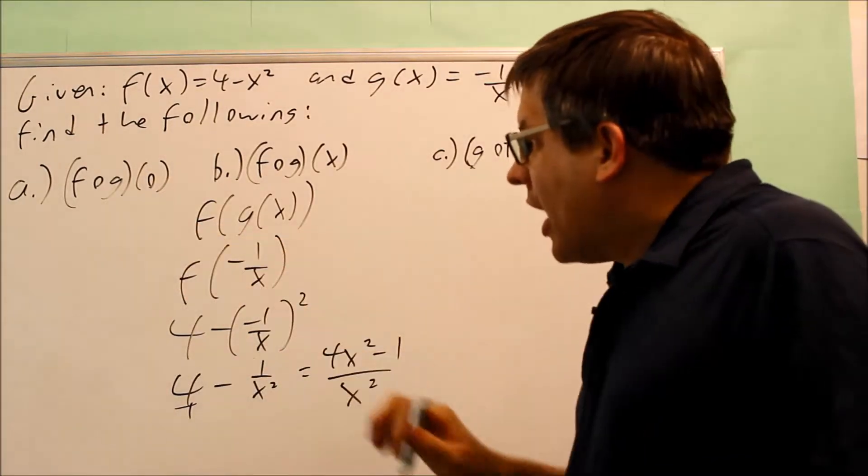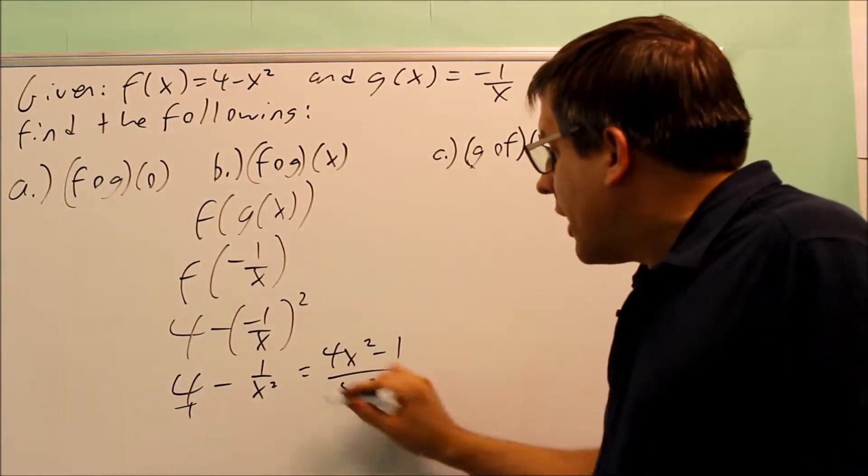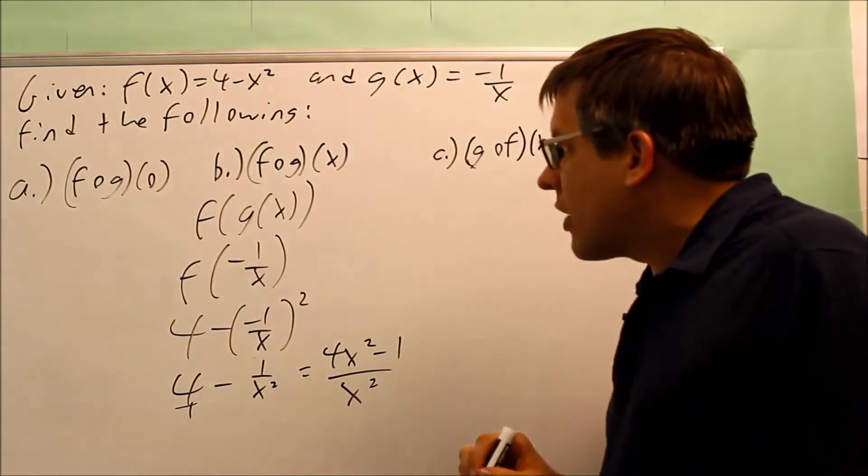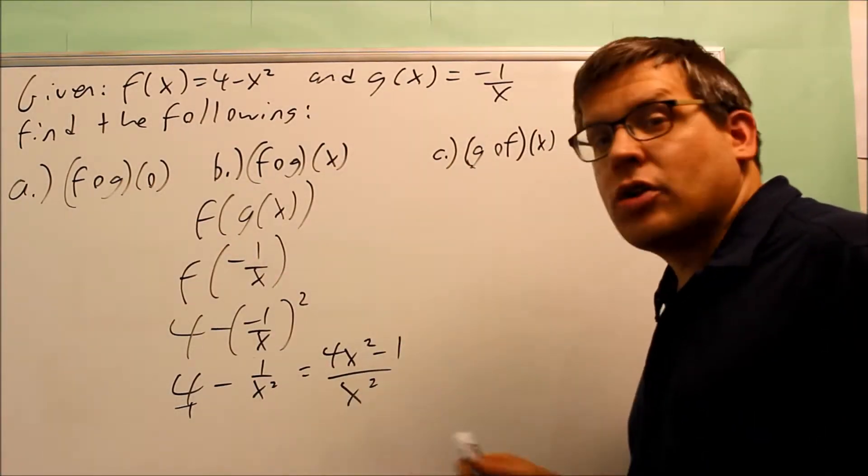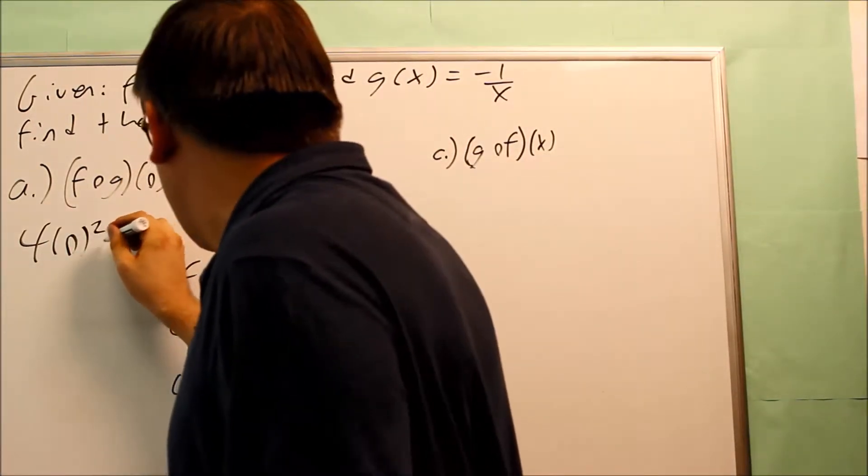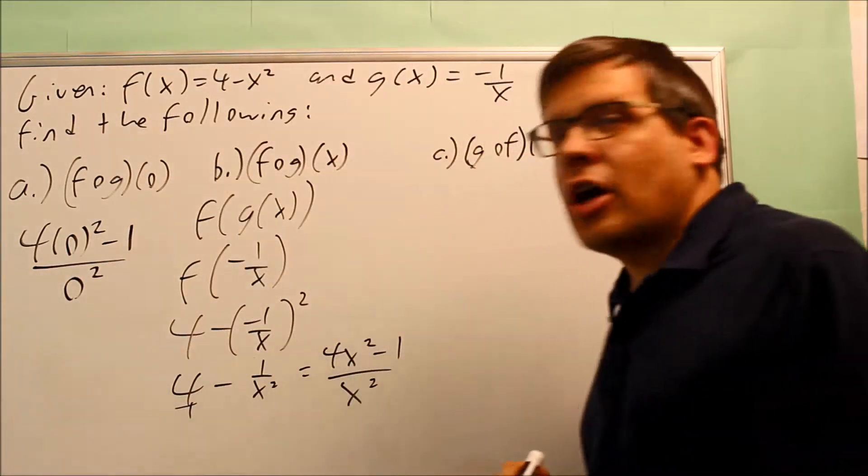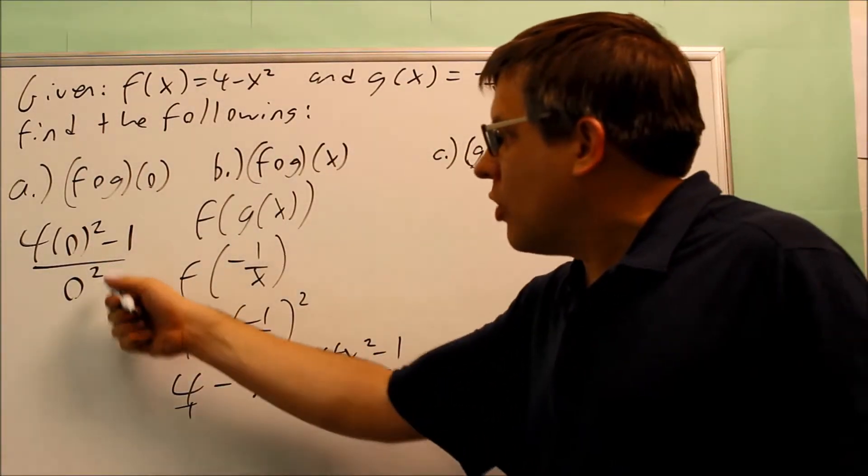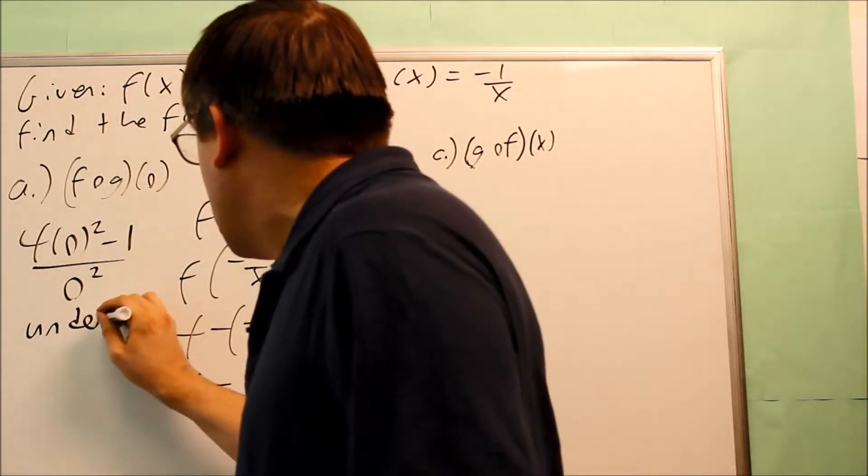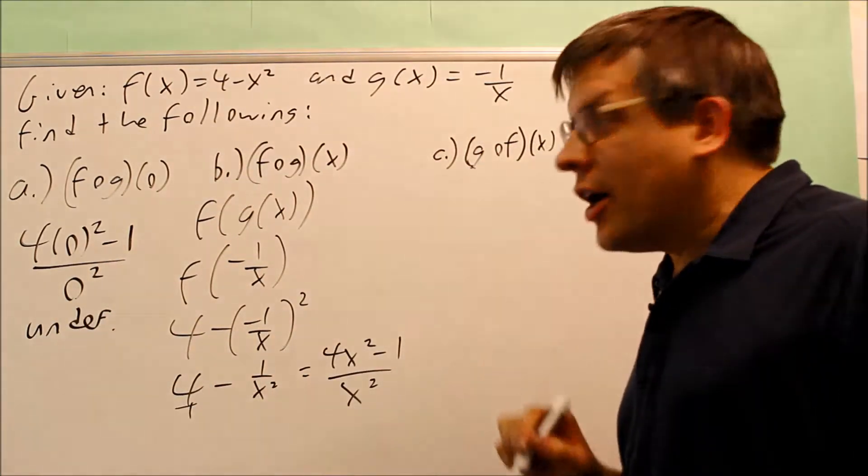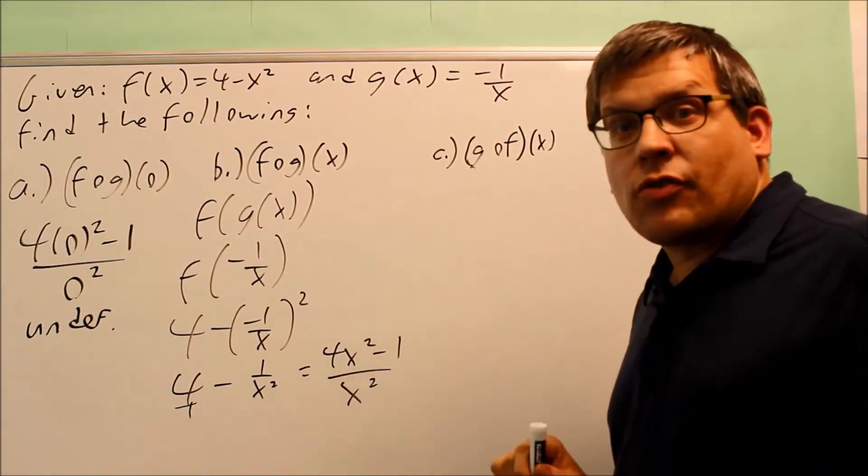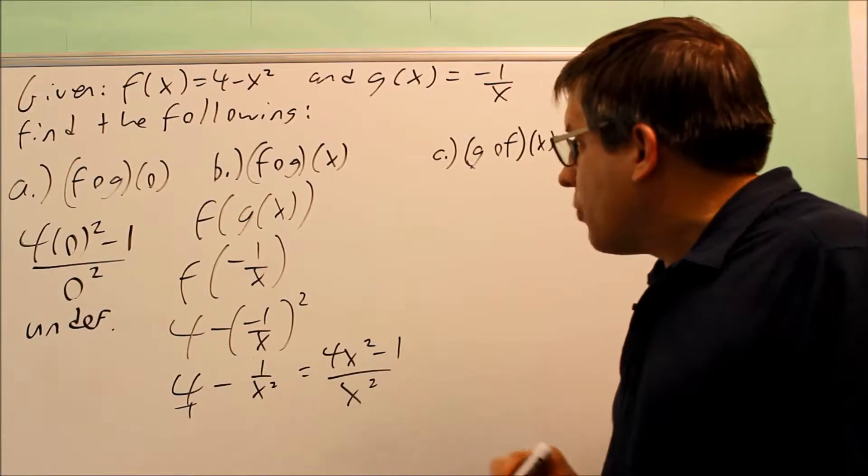This is asking us to find f of g of 0. So now that I have this expression complete, this would be my completed answer for f of g of x. I'm going to go over here and put in a 0 for both the x's. So I get 4 times 0 squared minus 1, and then I get 0 squared down below. The problem with this one is you're dividing by 0. So because you're dividing by 0, that's going to end up being undefined because you're not allowed to divide by 0. So A actually is undefined. We don't have an answer for that one.